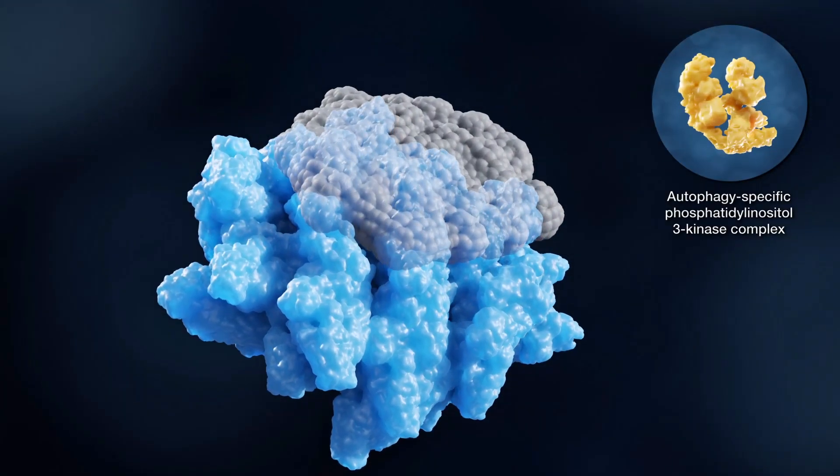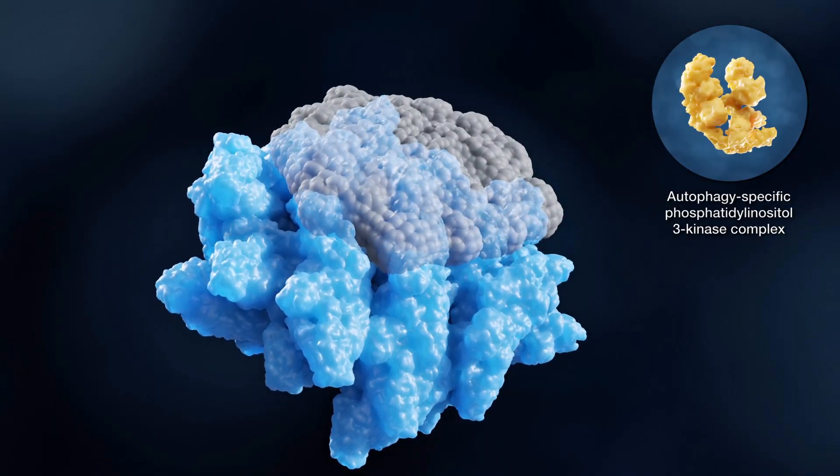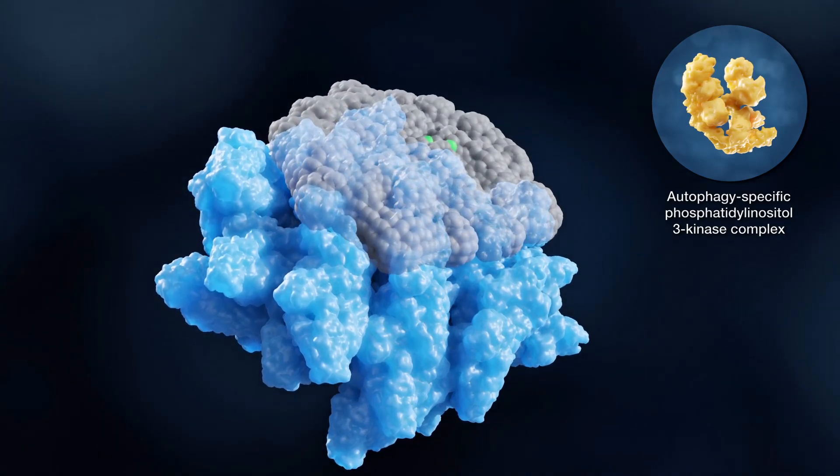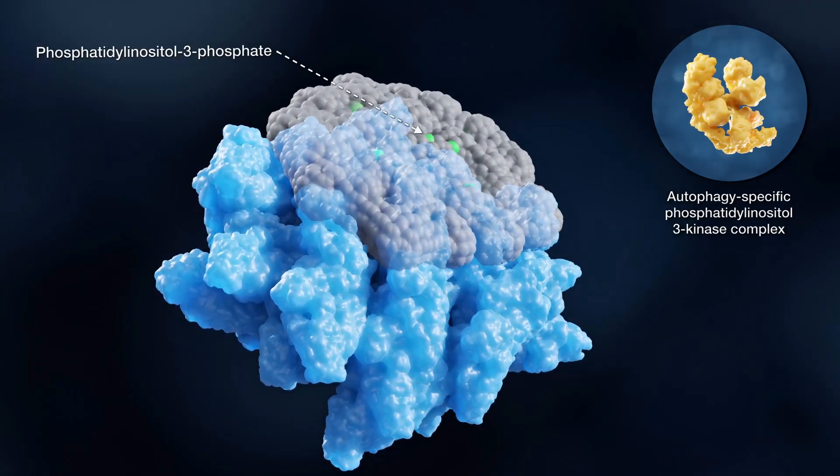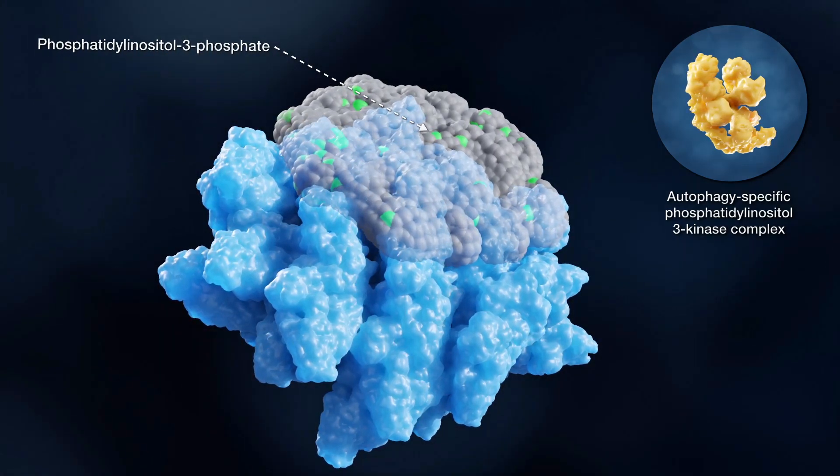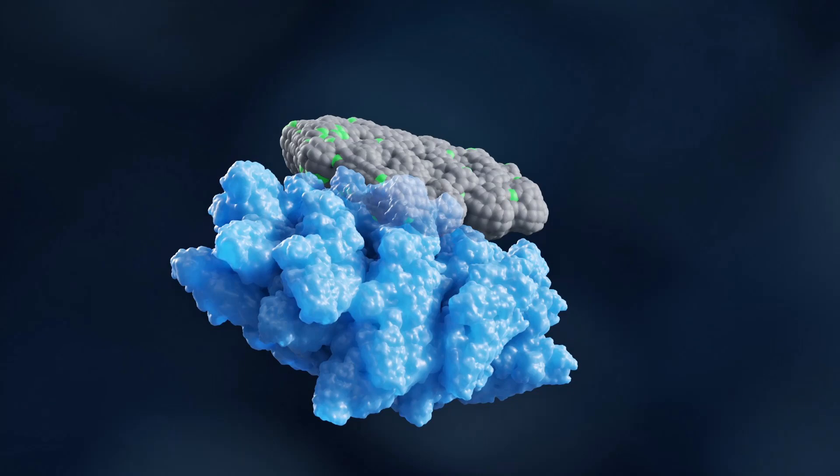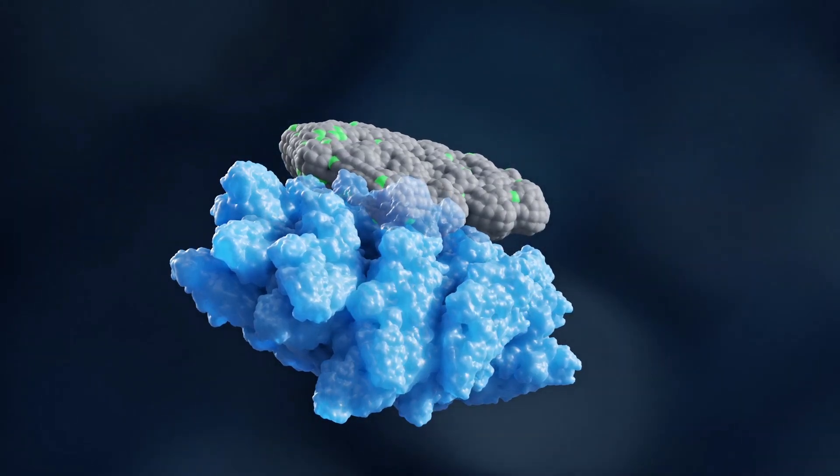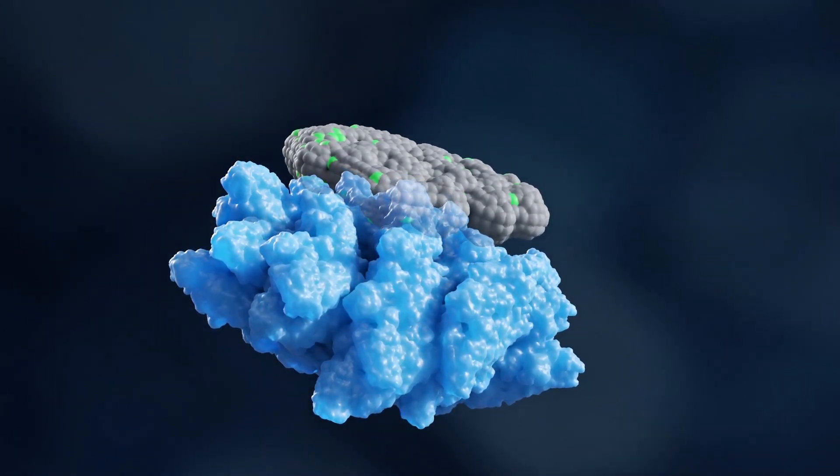The autophagy-specific phosphatidyl inositol 3 kinase complex also participates in phagophore nucleation by catalyzing the synthesis of phosphatidyl inositol 3 phosphate on nascent autophagosomal membranes. This is important for the recruitment of the components of the ATG machinery involved in the phagophore expansion.